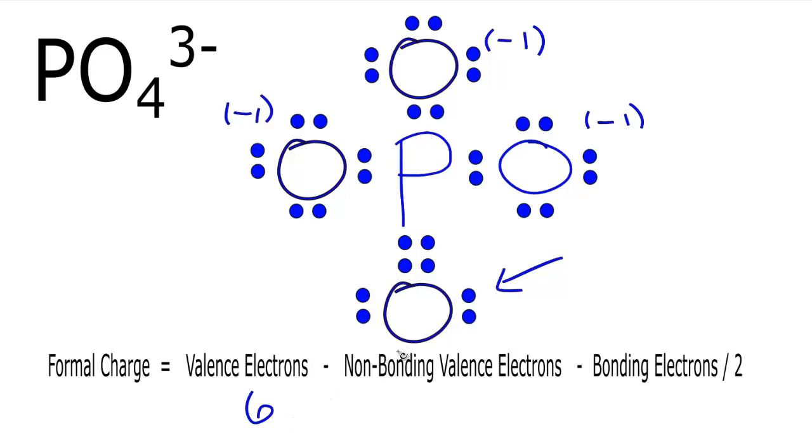We'll subtract from that the non-bonding, we have 2, 4 of those. From that we'll subtract the bonding, we have 2, 4 bonding, and we're going to put that over 2. So we have 6 minus 4 is 2 minus this 4 over 2 gives us zero. So the formal charge on this oxygen right here is zero.